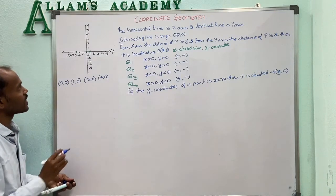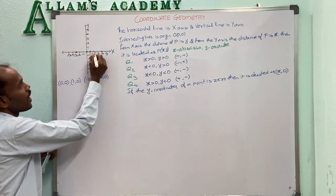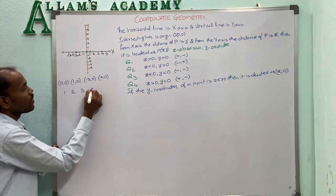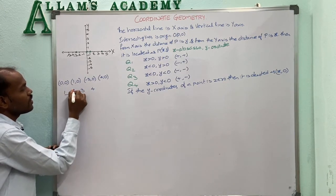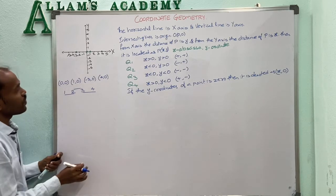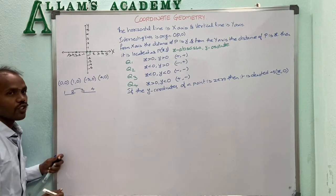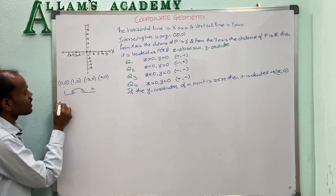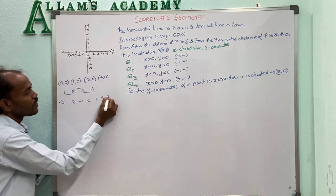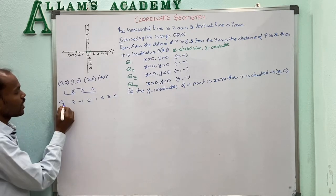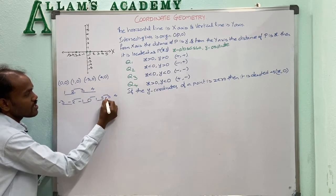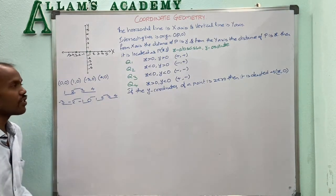Now finding the distance between these points: from (1,0) to (4,0) is 3 units — simply 4 minus 1 = 3. From (−3,0) to (4,0): counting gives 7 units. We get this as 4 minus (−3) = 4 + 3 = 7. If we do −3 minus 4 we get −7, a negative value. Since distance is always positive, we use the modulus: |−7| = 7.